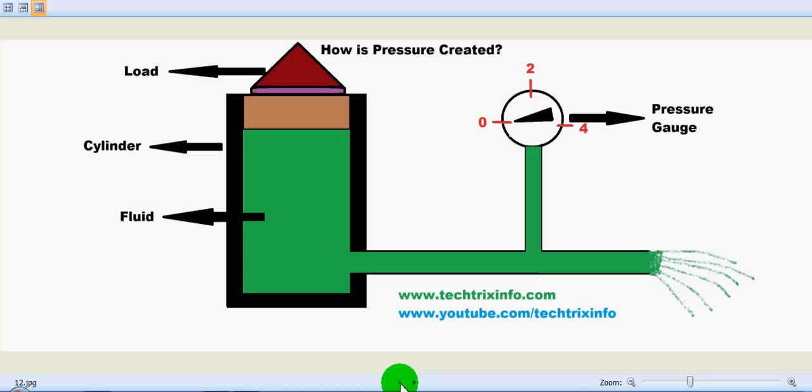So here we have a cylinder. This black body shown over here is a cylinder, and we have an opening that is connected to a pressure gauge which measures the pressure of the system.